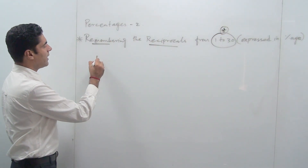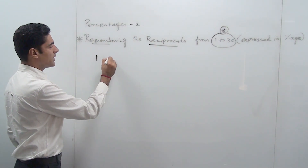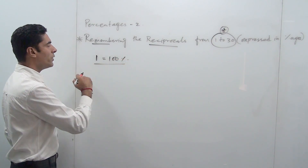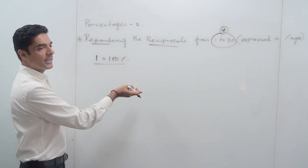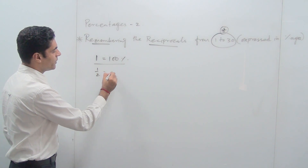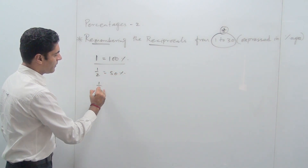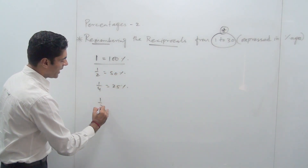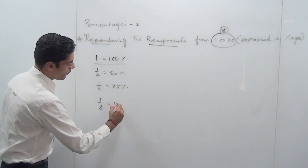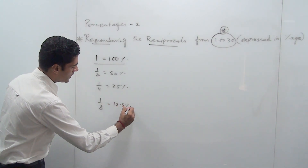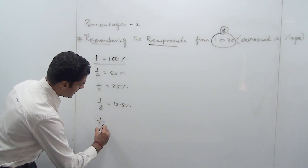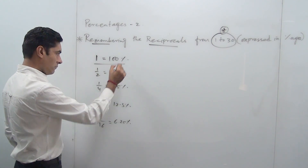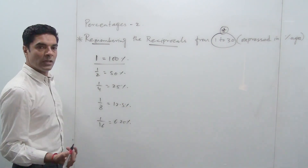We know that 1 is expressed as 100%. So if 1 is 100%, I am going to divide both sides by 2. So 1/2 is going to be 50%, 1/4 is going to be 25%, 1/8 is going to be 12.5%, and 1/16 is going to be 6.25%. This is something you can do very easily.